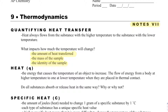Heat, when measured in joules — so not enthalpy, but just heat — is the variable Q. Not all substances absorb heat in the same way because they have different composition, different elements, different properties.